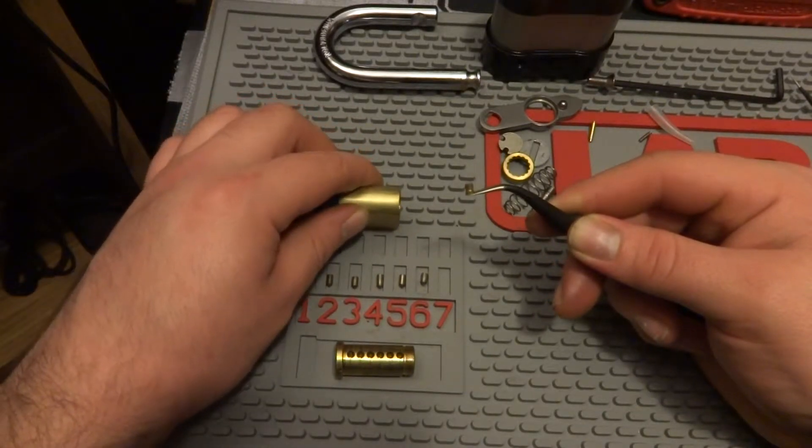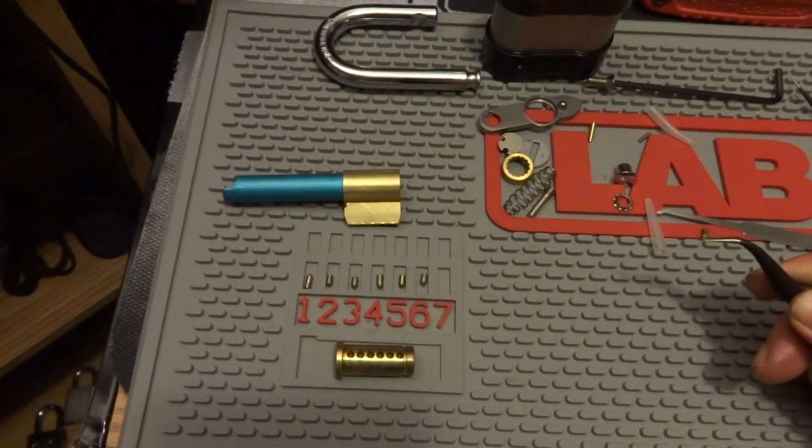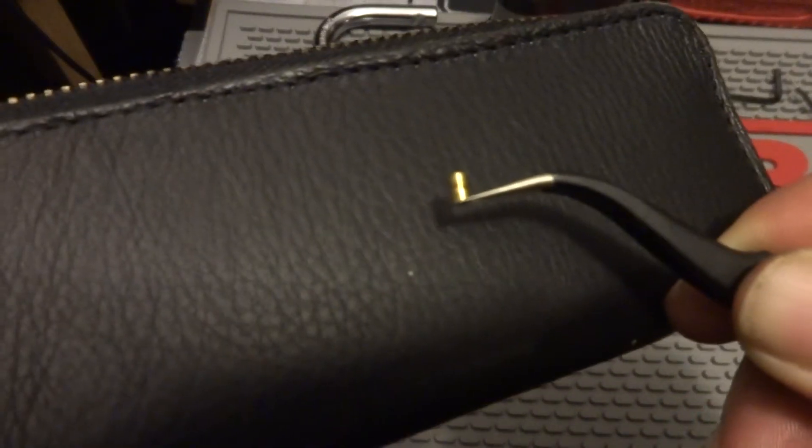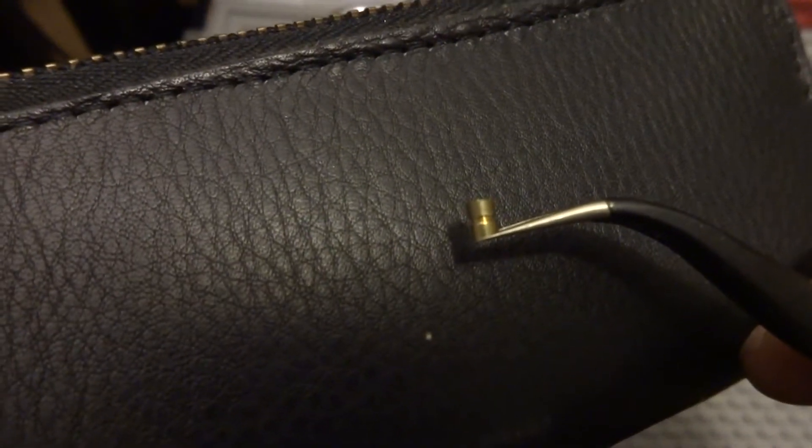Okay, in chamber one we got this interesting looking pin. Let me grab something here. It actually looks like a miniature spool pin.